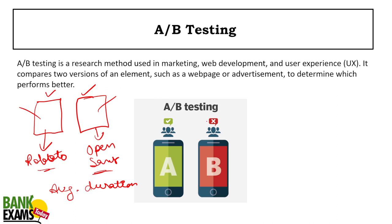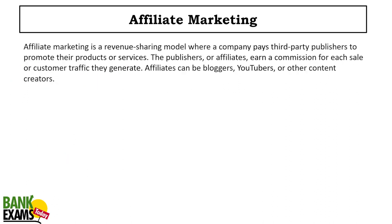Sometimes we change the color of the UX — for example, one version is green and the other is red, or one is blue and the second is green. Then we find out which one performs better and has a better user experience. A/B testing is a method used in marketing, web development, and user experience. It compares two versions of an element to determine which one performs better.